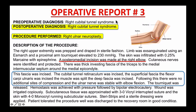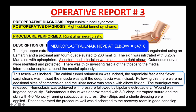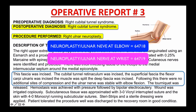On operative report number three, the key takeaway is that CPT has two different codes for neuroplasty: ulnar nerve at elbow (64718) and ulnar nerve at wrist (64719). When you read the details of the op report, you need to find out where the incision is made — either at the epicondyle elbow or at the wrist level.